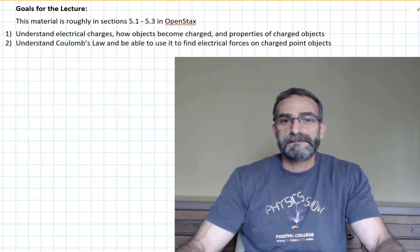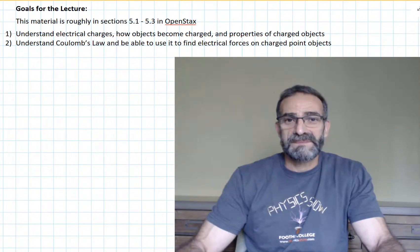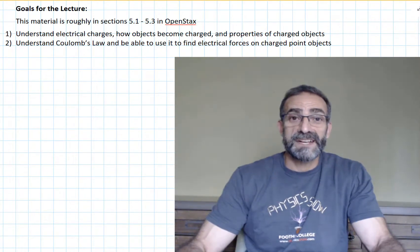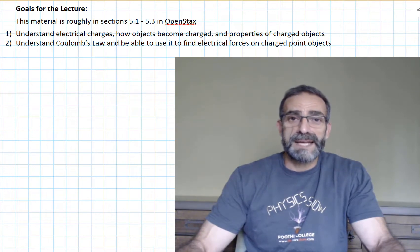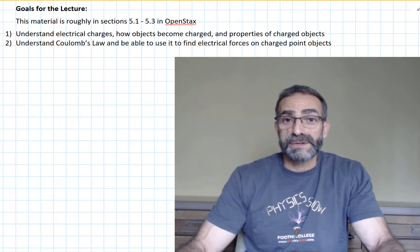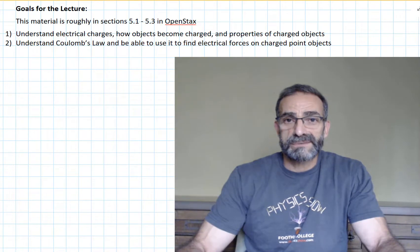Welcome to Physics 4B. At Foothill College, we're on the quarter system, so this is a one-quarter long class on electricity and magnetism. My name is Frank Coscorrano, and I'll be your instructor. Because electronics are so integral in every part of our lives, there are many applications we'll see this quarter. We'll learn how a photocopy machine works, how the magnetic stripe on your credit card or driver's license stores information, how speakers work — all kinds of interesting applications. Let's get started.